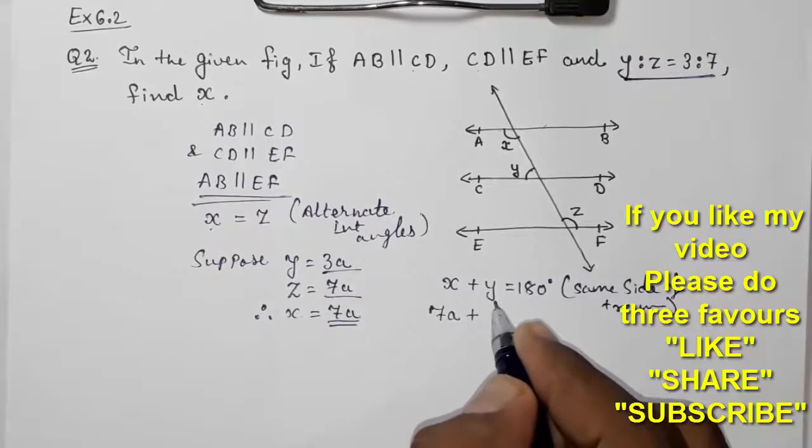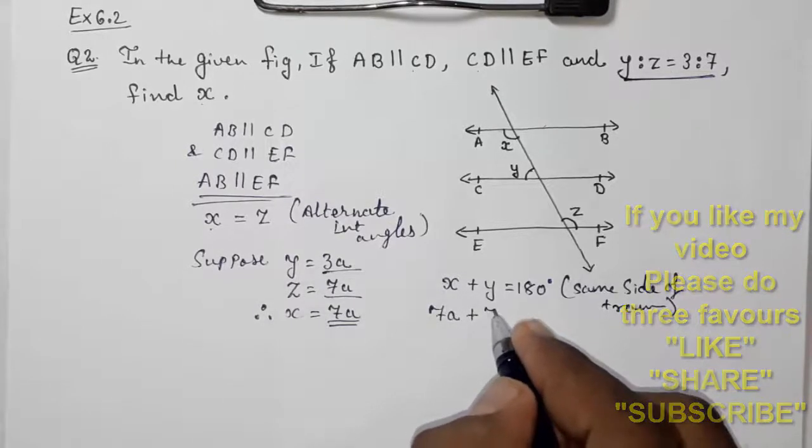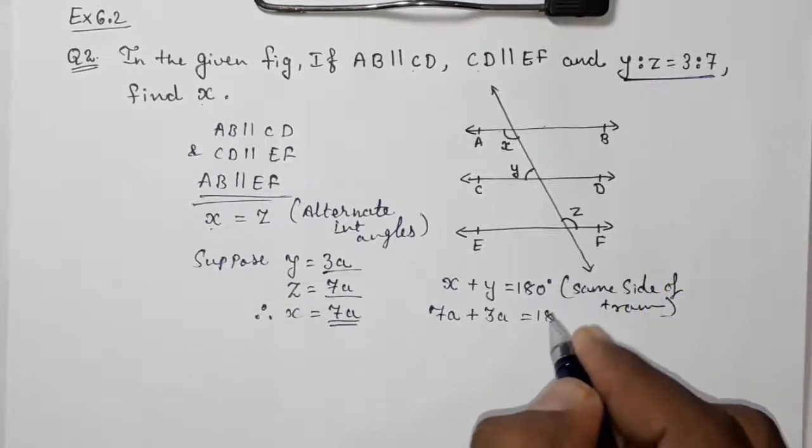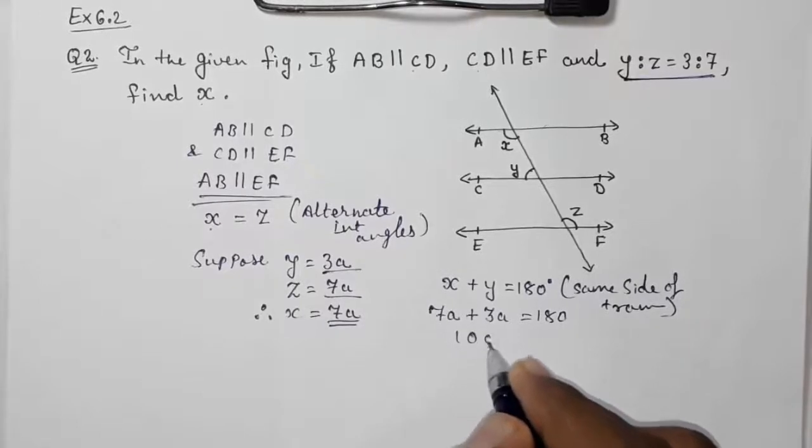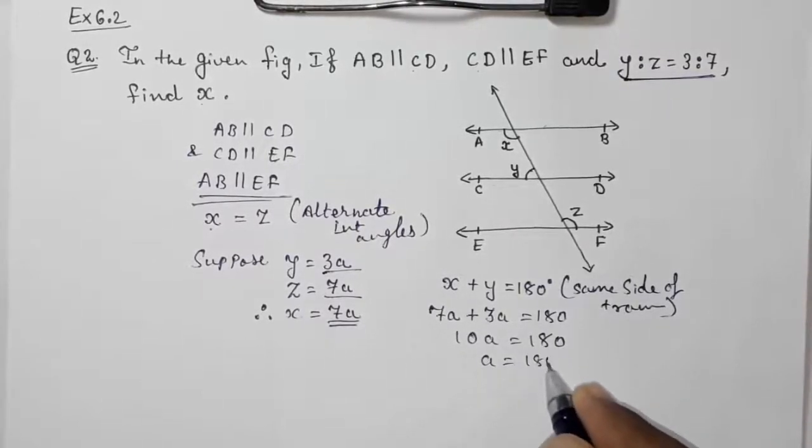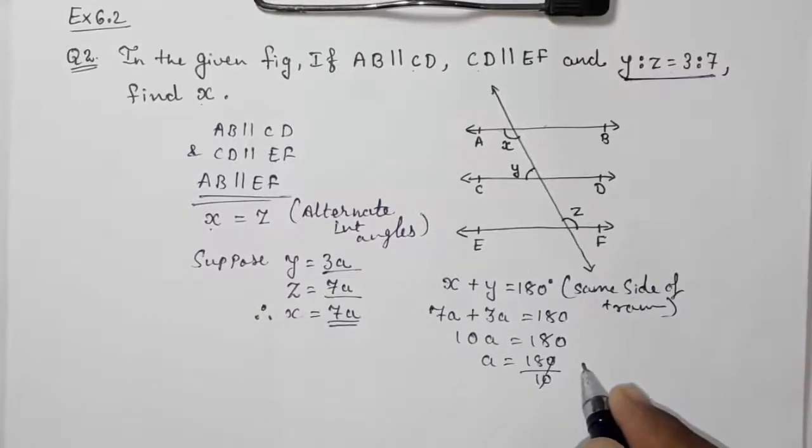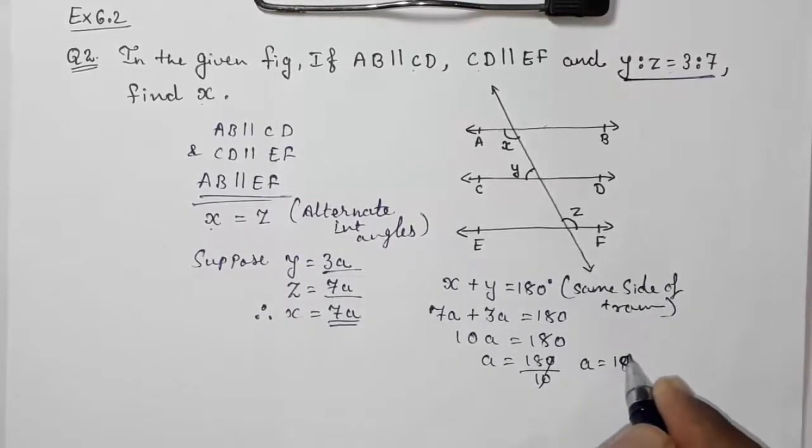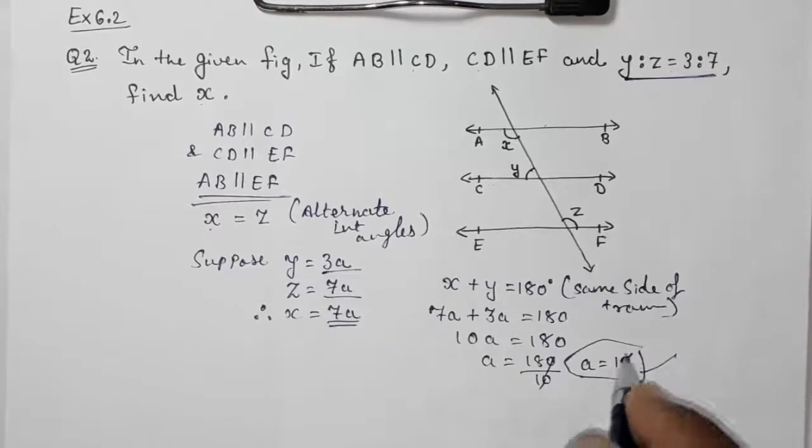On the place of X we are going to put 7A, on the place of Y we are going to put 3A equals 180 degrees. 10A equals 180 degrees, A equals 180 by 10, therefore A equals 18.